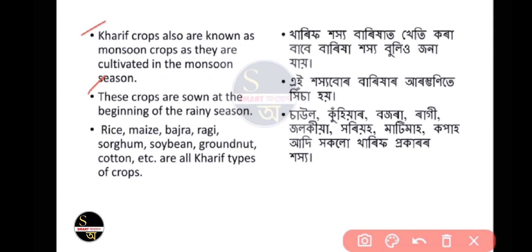Examples of Kharif crops include: Saul, Sugarcane, Bajra, Raghi, Jowar, Khuriya, Moong, and Cotton. These are very important crops to remember.